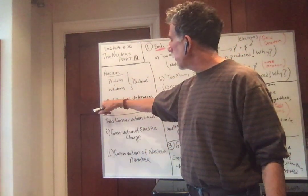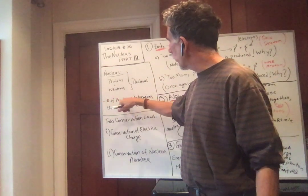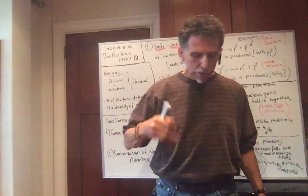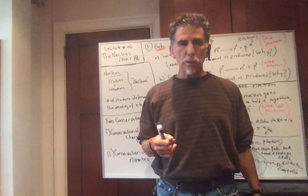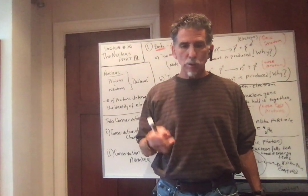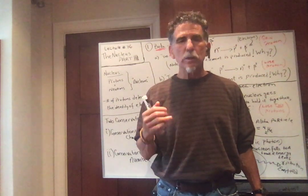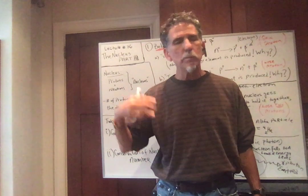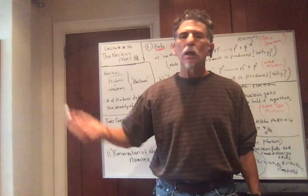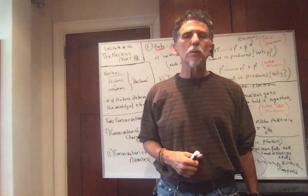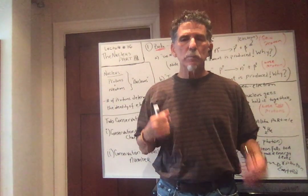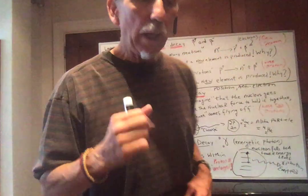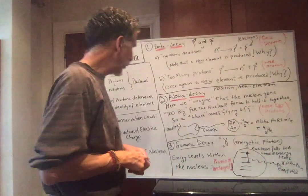The number of protons determines the identity of an element — not the number of neutrons; that's an isotope. So if you have one proton, you're hydrogen; two protons, helium; three, lithium; six, carbon; 92 protons, you're uranium. So it's the number of protons that determines the identity of the nucleus.